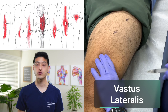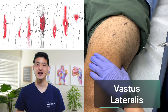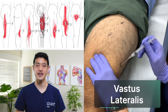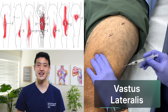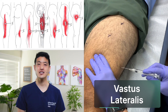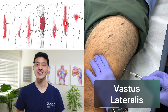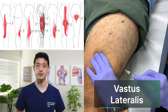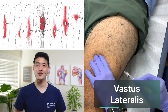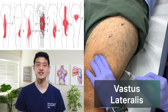I typically will treat up and down the vastus lateralis, paying extra attention to the areas marked with an X on the diagram to the left. I move on to the next area once we are no longer getting any twitch responses. I'll treat as many areas as the patient can tolerate in one session.